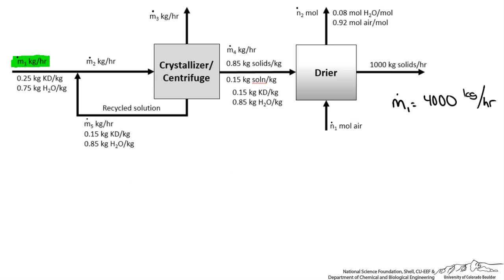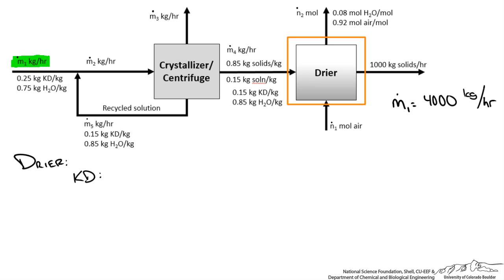Now that we have removed one unknown, we still cannot write three species balances for the remaining unknowns because N1, N2, and N3 only involve water and air — we cannot do a potassium dichromate balance among them. So we need to move elsewhere to solve. Using that same logic, we could do a balance around the dryer, since only one stream in and one stream out contains potassium dichromate.